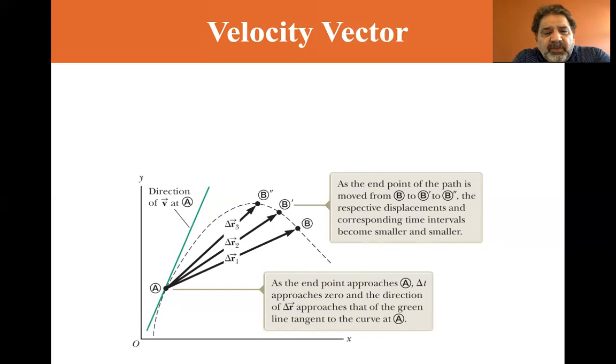And we can see that as we decrease the delta R vector, we come up with the direction of the velocity at point A. So as the endpoint of the path is moved from B to B prime to B double prime, the respective displacements and corresponding time intervals become smaller and smaller. As the endpoint approaches A, delta T approaches zero and the direction of delta R approaches that of the green line tangent to the curve at A.